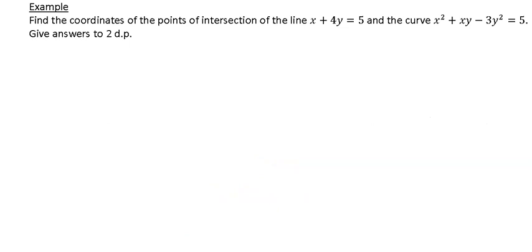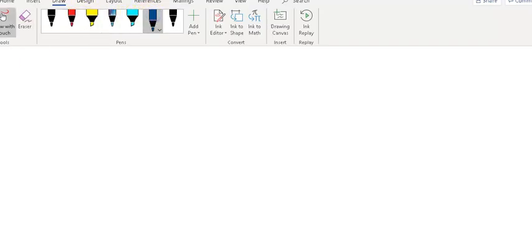In this one it says find the coordinates of the points of intersection of the line x plus 4y equals 5 and the curve x squared plus xy minus 3y squared equals 5. Give your answer to two decimal places.